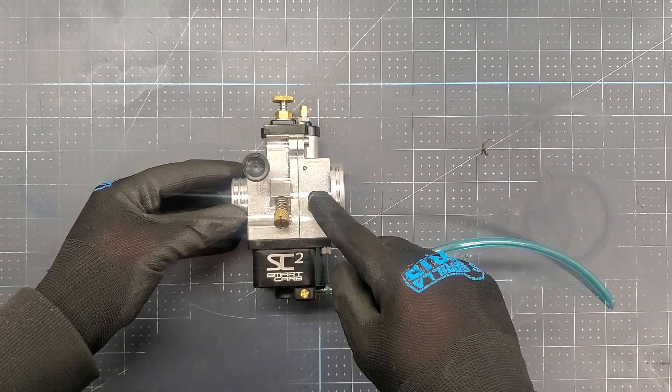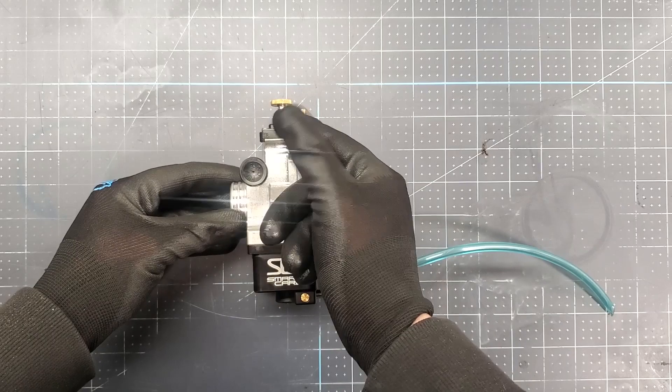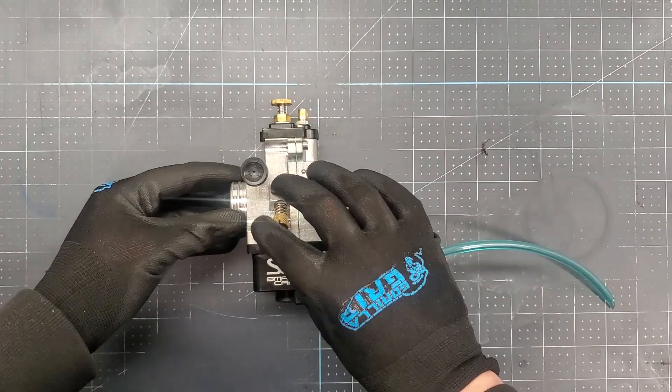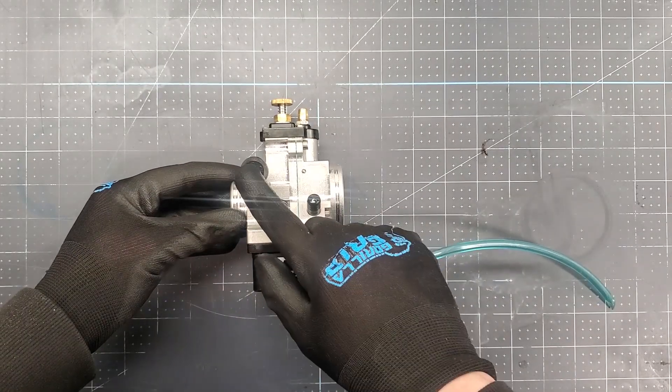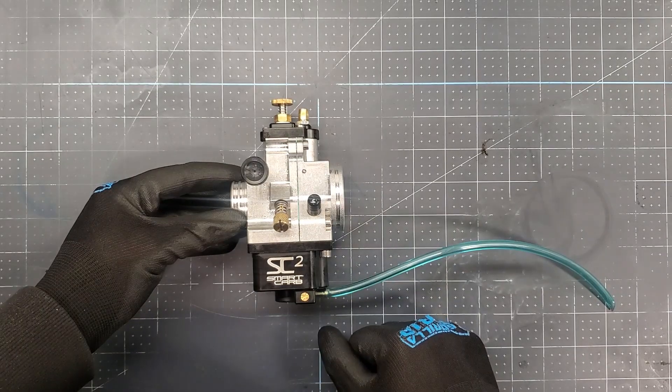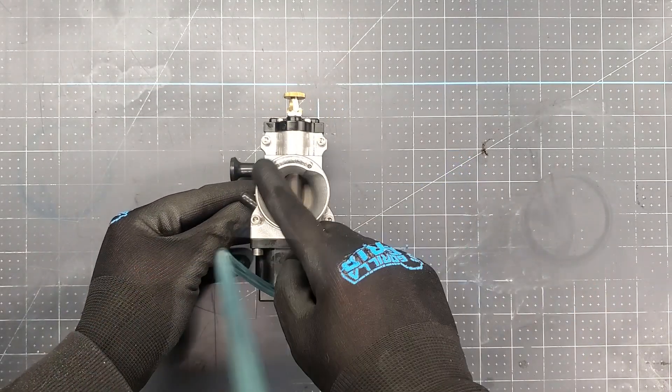Everything you need on the carburetor is on one side, which is a fuel inlet, a choke and your idle adjustment. The choke actually uses Mikuni parts so you can get any Mikuni aftermarket cable choke or whatever and it will work.